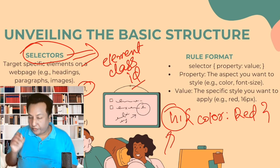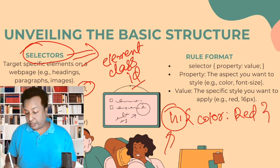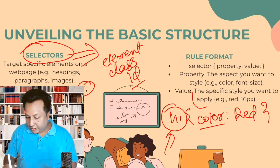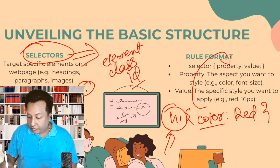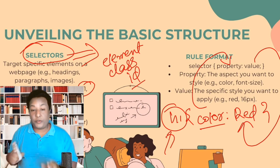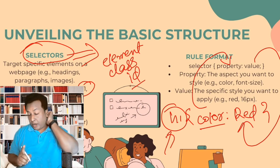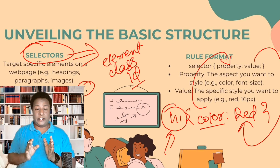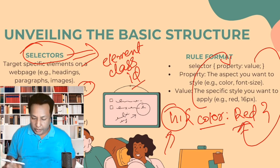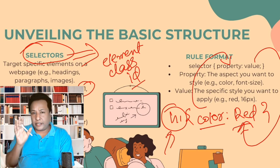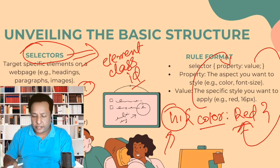We're selecting all h1 elements on the page. The property we want to change is 'color', and the value we want to assign is 'red'. So this CSS will change all h1 colors to red. I hope the basic structure of CSS — selector, property, and value — is clear to you.